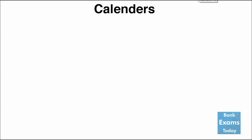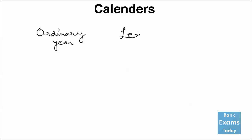Hello friends, welcome back to BankExamStrata.com. Today we will do a very important chapter in reasoning — that is calendars. First of all, you should know there are two types of years: the first one is an ordinary year, and the second one is a leap year. There are 365 days in an ordinary year.